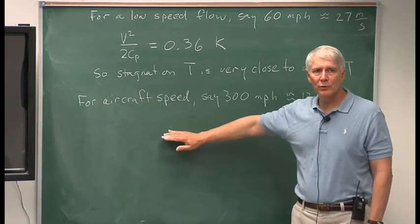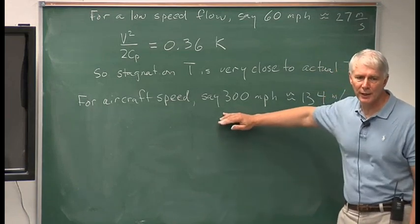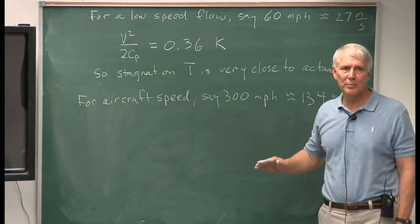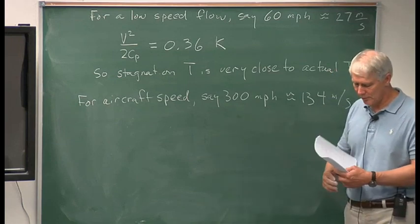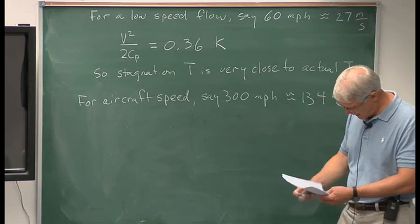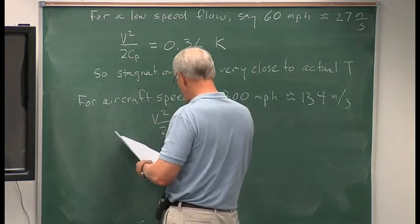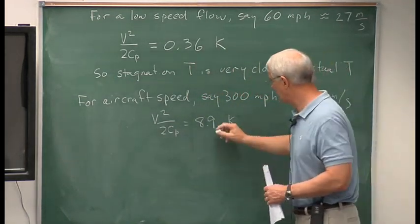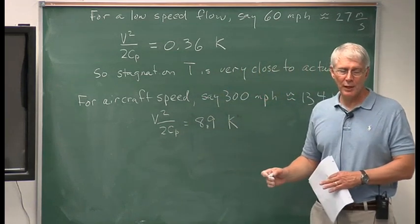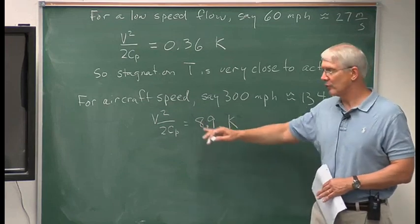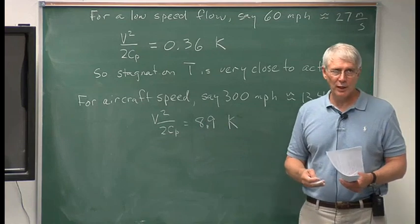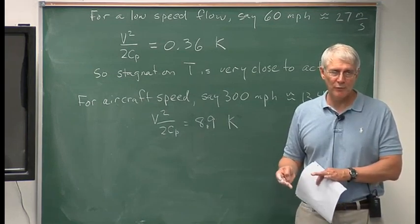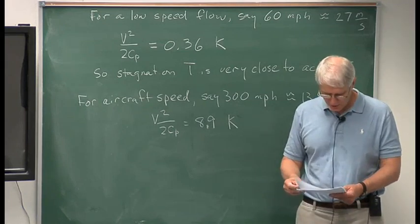Now let's go to aircraft speed. At 300 miles an hour — about 134 meters per second, somewhere between a small Cessna and an airliner — the temperature rise V squared over 2 CP is equal to 8.9 degrees Kelvin. So the temperature does become noticeable at these speeds. For an airliner going 500 miles an hour, because it goes with the square, the temperature rise is going to be significant. Pilots flying at those speeds, when calculating aircraft performance, do have to take into account the temperature rise measured by a probe on the aircraft.